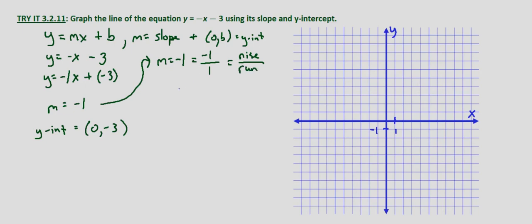So what we have is rise equals negative 1 and our run equals 1. So for every 1 we go down we go 1 to the right.